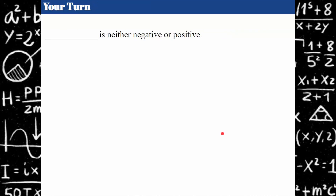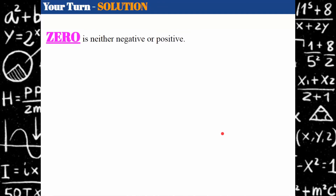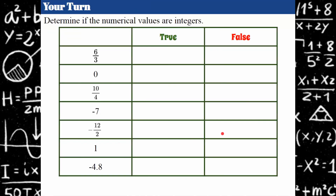Your turn again — blank is neither negative or positive. Come back when you're ready. Zero is neither negative or positive. Your turn: fill out the chart, true or false. Go ahead and pause, come back when you're ready. So 6 thirds — 6 divided by 3 simplifies to 2, and 2 is an integer, so that is true. Zero is an integer.